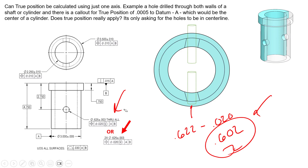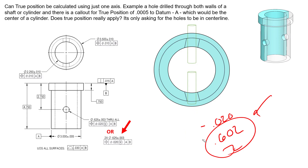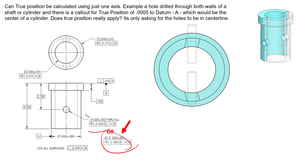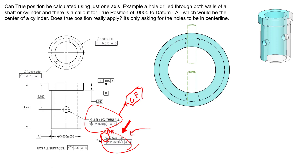The key difference: in Option 1, you guarantee a single 0.622 pin passes through both holes simultaneously. In Option 2, you only guarantee a 0.622 pin through each hole individually — not necessarily both at once. The question is what you care about functionally. Option 1 can be clarified with the CF symbol; you cannot add CF to Option 2 since you're explicitly declaring two separate controls. Consider what size and position functionality matters for your application, then weigh the pros and cons of each approach.